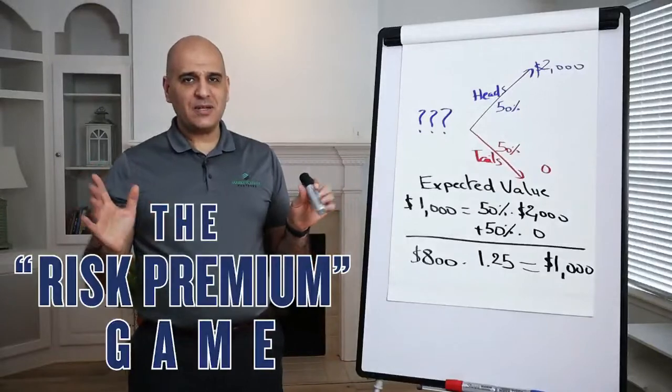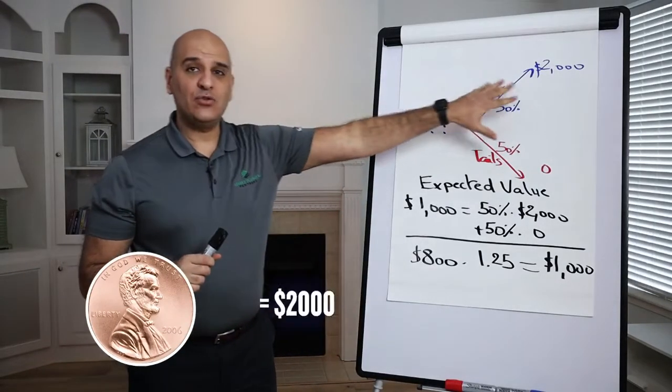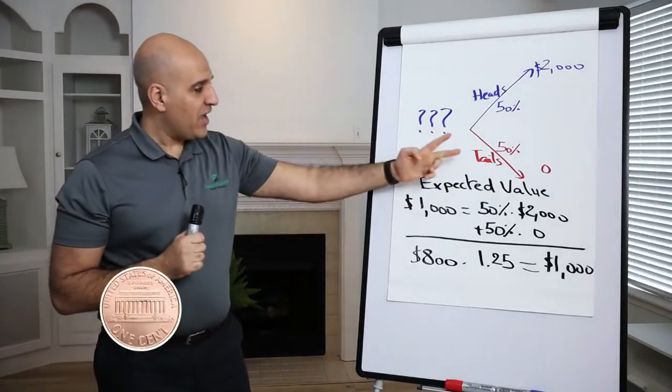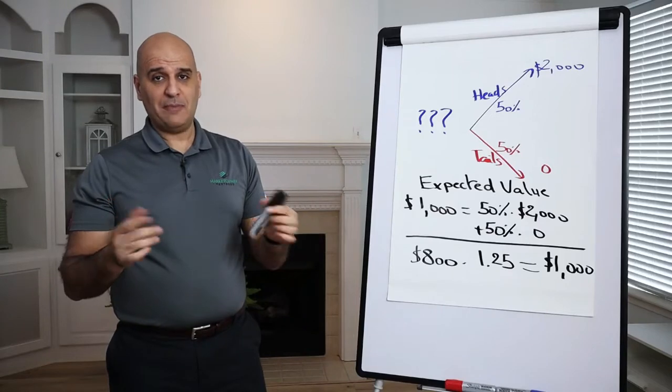The game is actually simple. We are going to flip a coin. Heads, you get $2,000. And tails, you get zero. And of course, you have to pay to play the game.